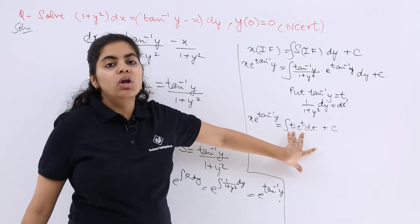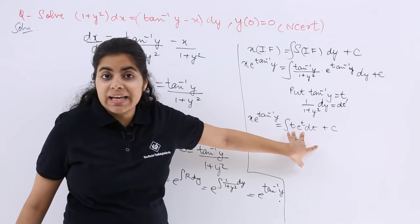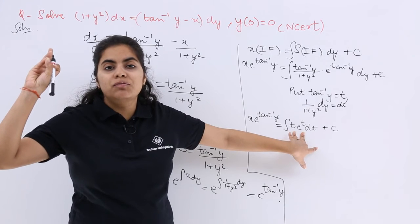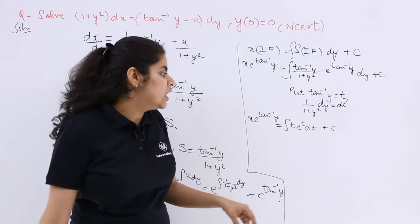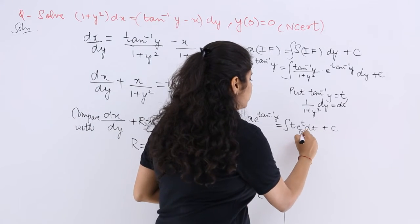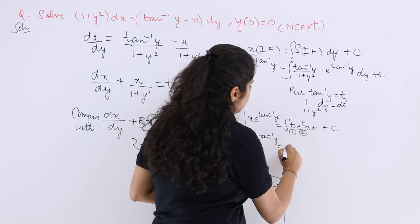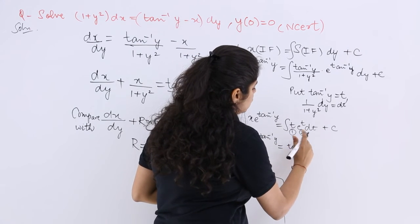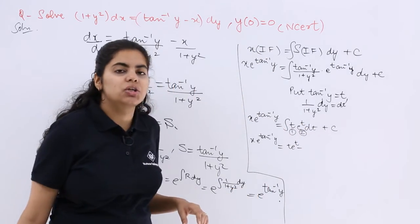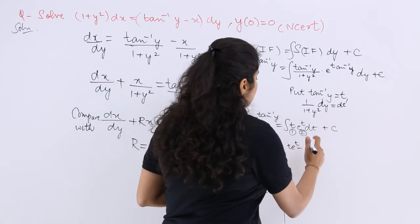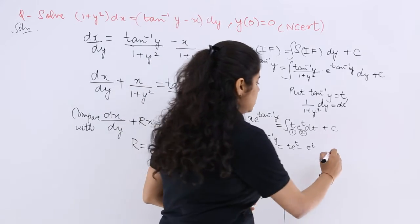This integral ∫t · e^t dt is solved by integration by parts, following the ILATE rule: inverse trigonometric, logarithmic, algebraic, trigonometric, exponential. So t is the first function and e^t is the second. Result: first function × integration of second minus ∫(differentiation of t × integration of second) dt, giving t·e^t - e^t + c.